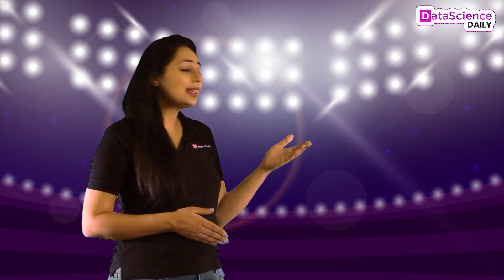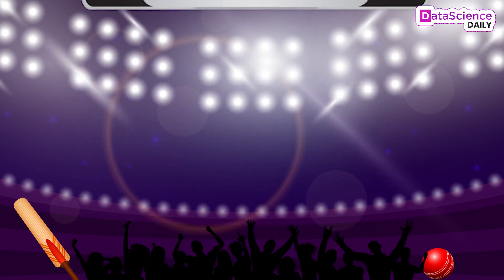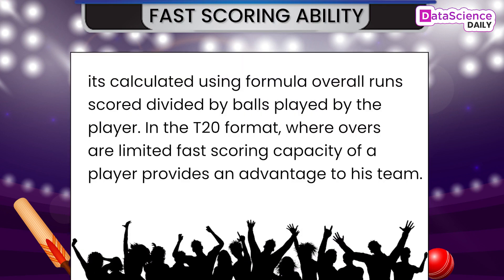Some of the batting metrics used for analysis are: Consistency — calculated by dividing total runs scored by the number of times a player has been dismissed. A consistent player is surely a priceless asset for any team. Fast Scoring Ability — calculated using the formula: overall runs scored divided by balls played by the player. In the T20 format where overs are limited, fast scoring capacity provides an advantage to the team.